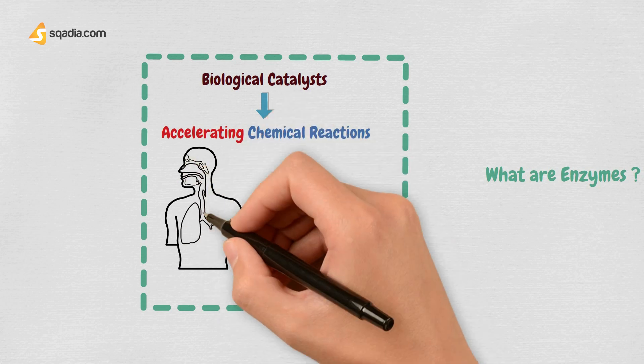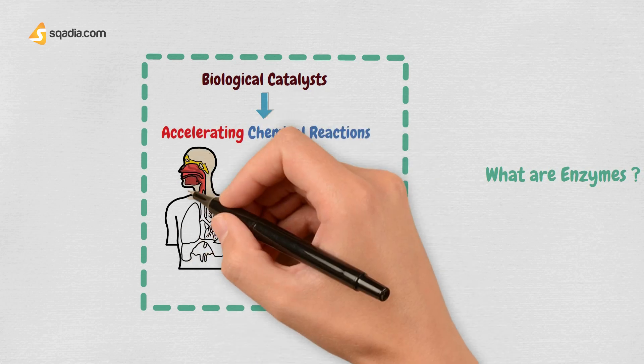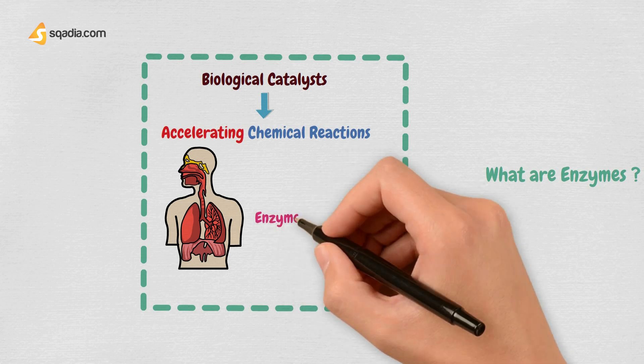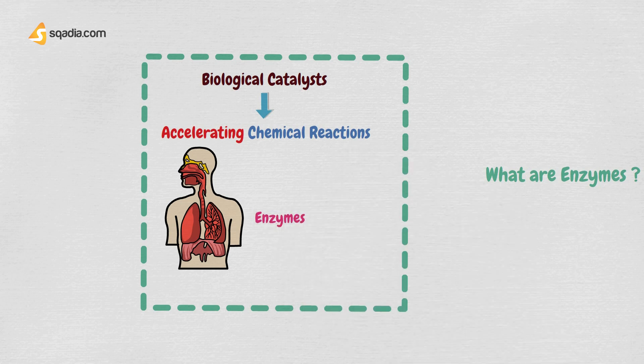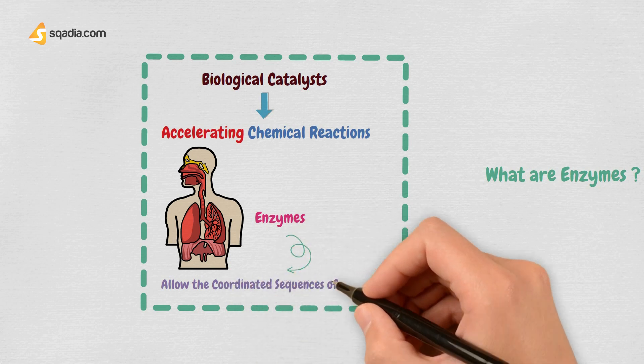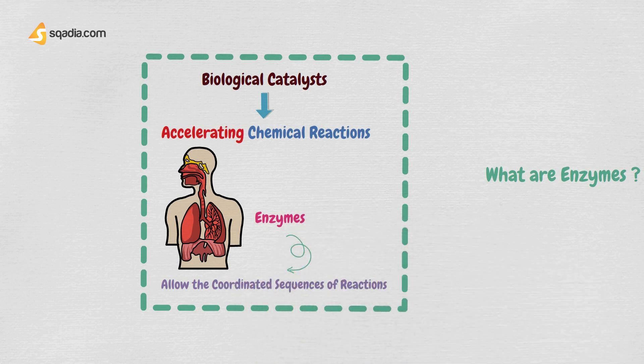Within the body there are countless metabolic processes taking place and enzymes play the most vital role in making sure the processes occur as genetically planned. In other words, the enzymes are what allow the coordinated sequences of reactions to take place.